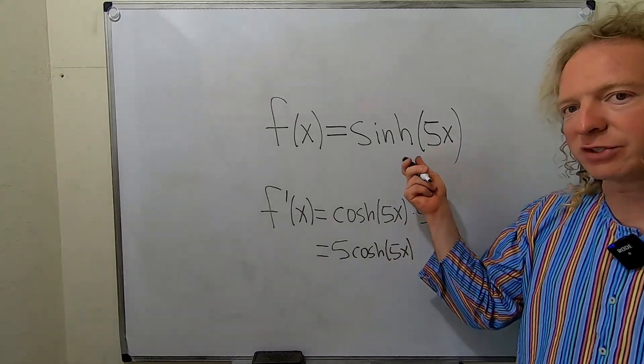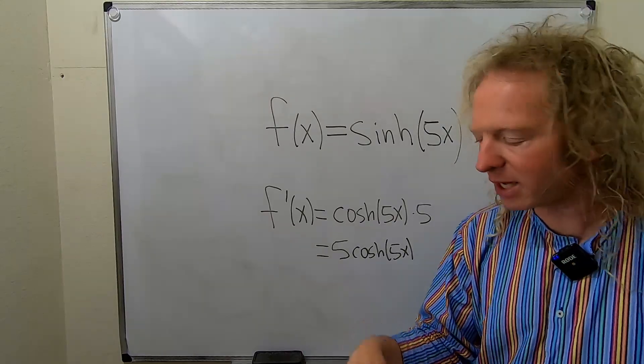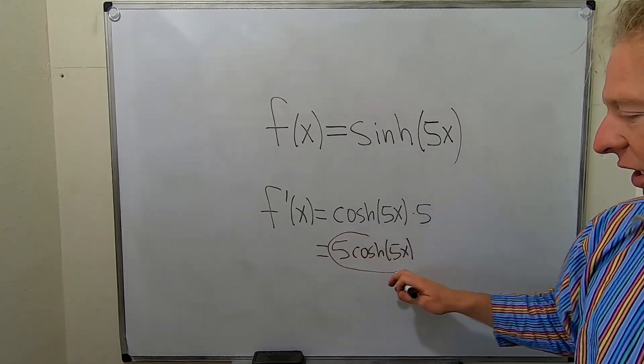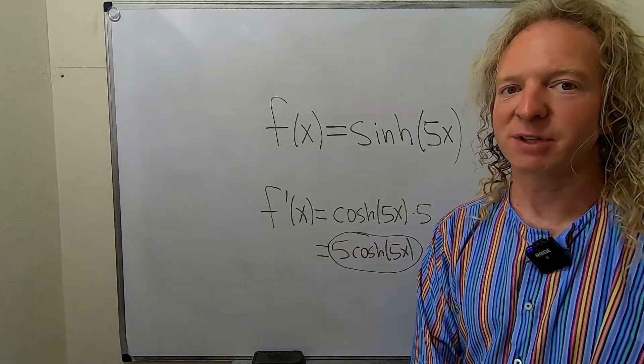So again, the derivative of sinh is cosh. So here we get cosh of 5x times the derivative of the inside, which is just 5. And that is the final answer. I hope this video has been helpful. Take care.